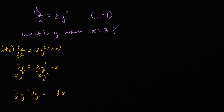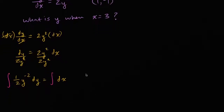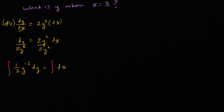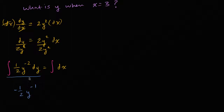Now we can integrate both sides. The left-hand side: we rewrite it as one-half y to the negative two power dy. We increment the exponent — y to the negative two becomes y to the negative one — then divide by negative one. So the left side becomes negative one-half y to the negative one power. We'll write the constant of integration on just one side.